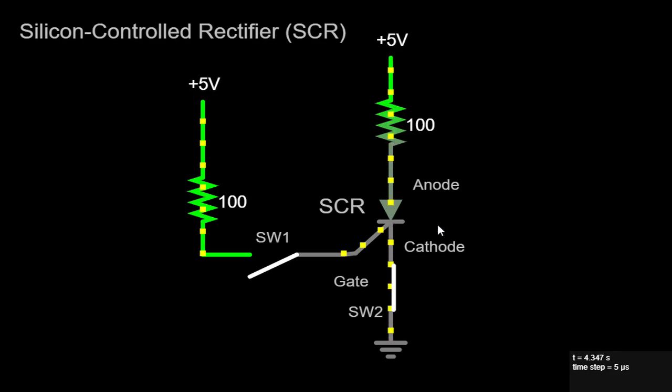In our circuit, the plus 5 volt source provides the necessary gate trigger voltage, while the 100 ohm resistor limits the gate current to a safe and controlled level. This resistor serves as a protective element, preventing excessive current from flowing through the SCR and ensuring stable operation.